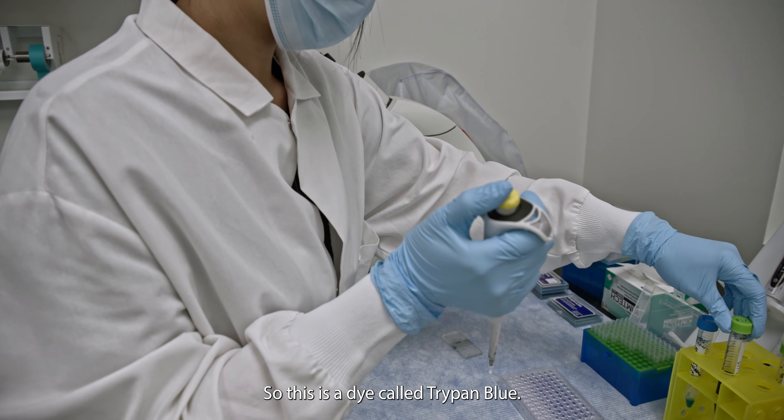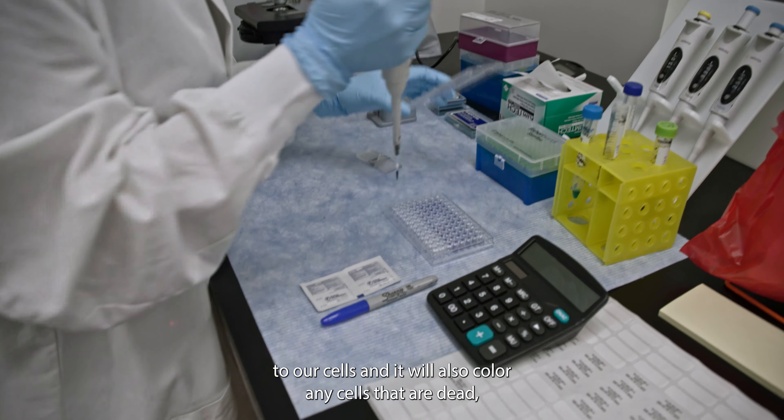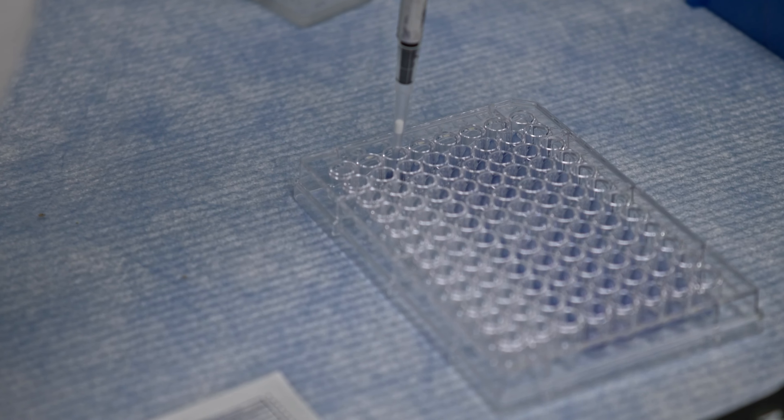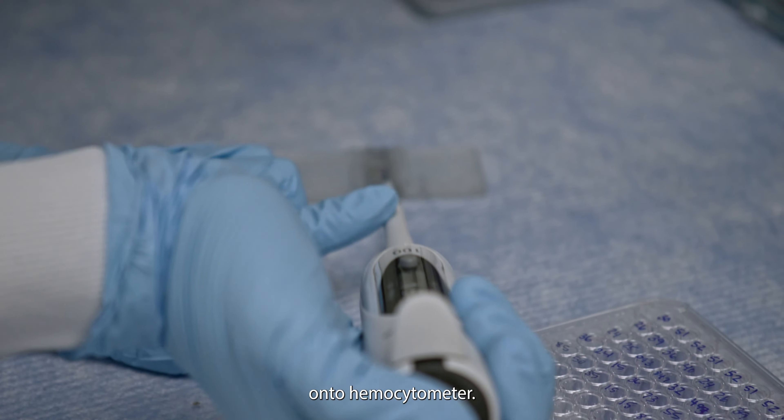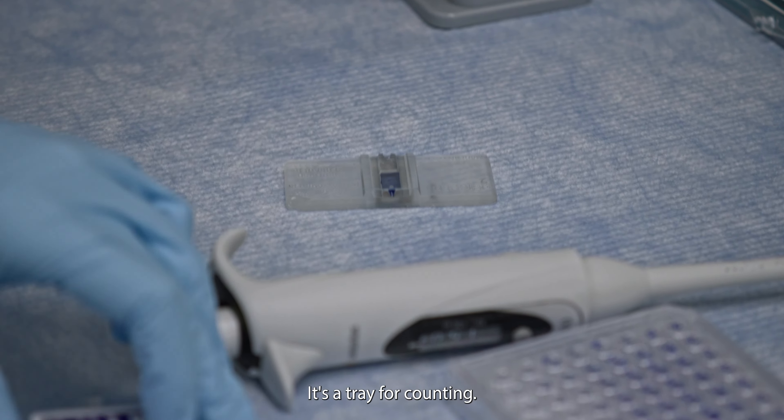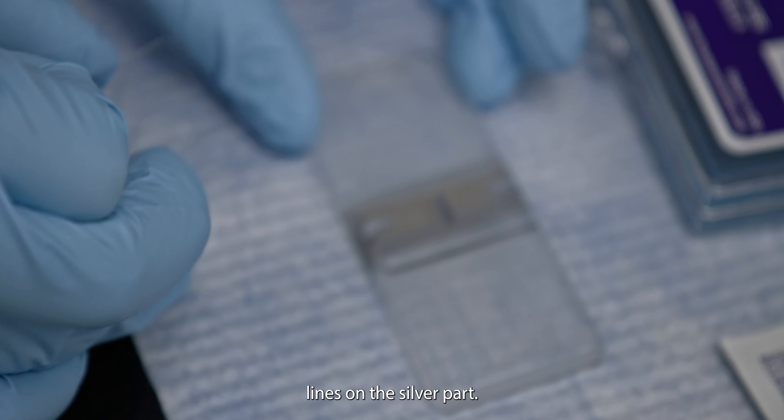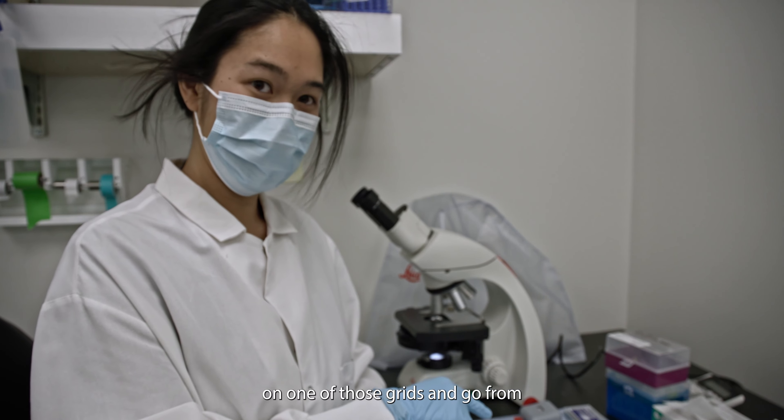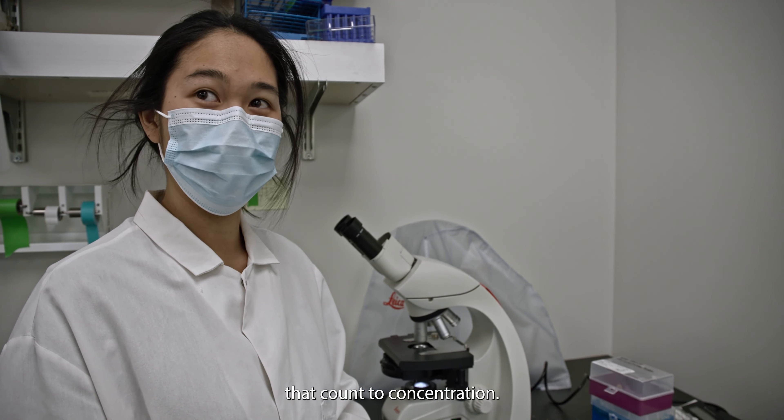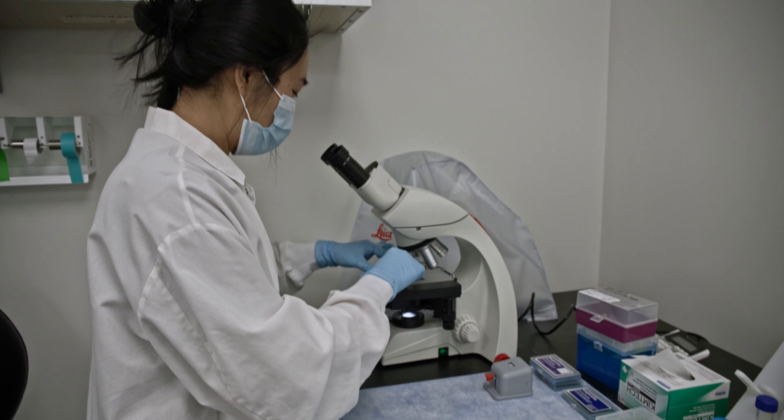So this is a dye called Trypan Blue. It will give a dark blue background to our cells and it will also color any cells that are dead a deep blue. So I'll mix that with our sample and load it onto the hemocytometer. It's a tray for counting. I don't know if you could pick it up, but you could see very tiny etched lines on the silver part. There's a way to calculate how many cells are in a square on one of those grids and go from that count to concentration. It's a lot of math that I just learned the shortcuts for.